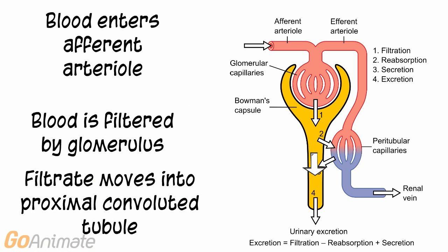The blood is filtered by the glomerulus, and the filtrate enters the proximal convoluted tubule of the nephron. Here substances can move back and forth between the blood in the peritubular capillaries and the tubule.